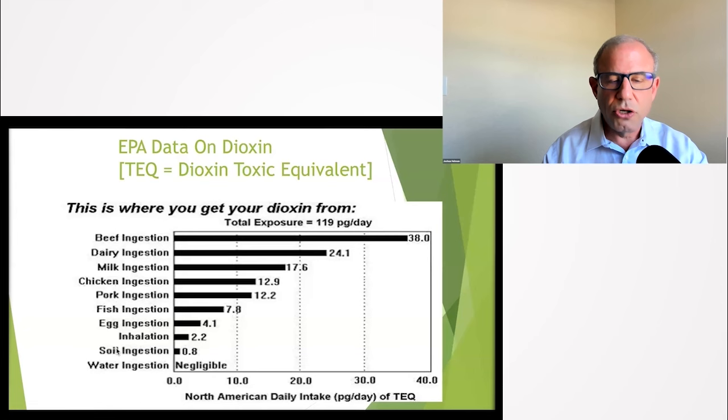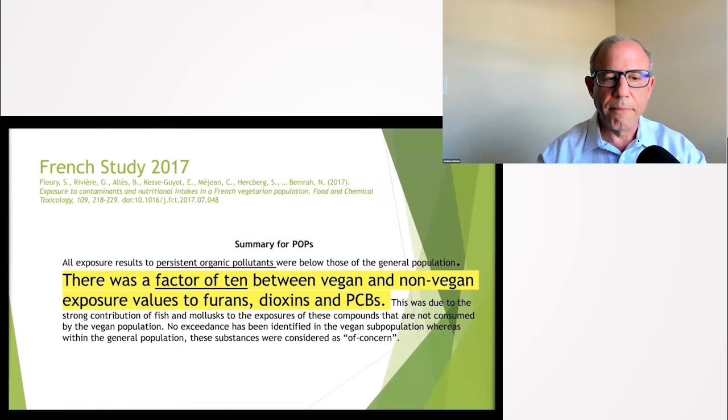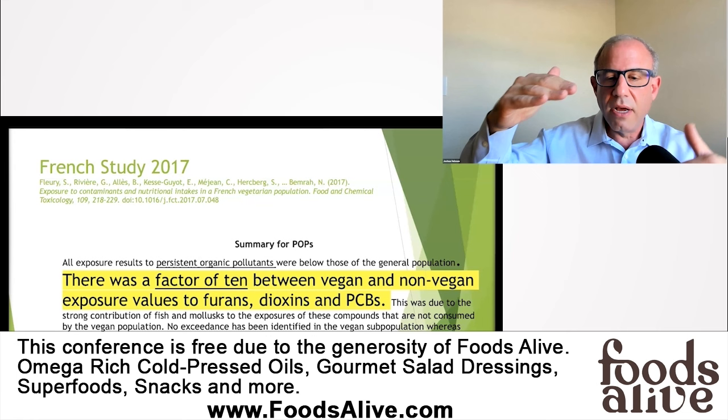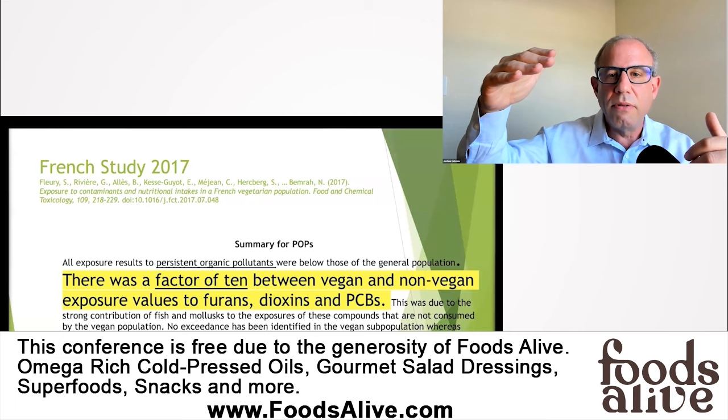As an example, an endocrine disruptor, a man-made chemical called dioxins - this data on this slide is from the government, from the EPA. Where do people get most of these endocrine disruptor toxins like dioxins? You can see the biggest exposure is from beef, dairy milk, chicken, pork, fish, and egg. Sure you can breathe some of it in the air, there's a little bit in the soil, not much in the water, but if most of your diet is from animals you're going to get a much bigger dose of these dioxins.